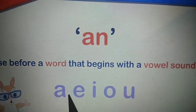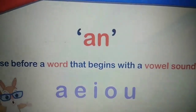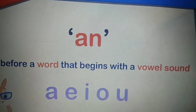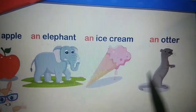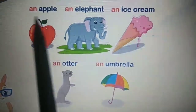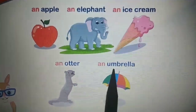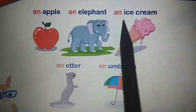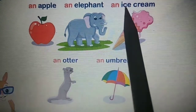Jin words ke starting mein, beginning mein, vowel letters aate hain — A, E, I, O, U — unke pehle hum AN article ka use karenge. Now let us see a few examples: an apple, an elephant, an ice cream, an utter, an umbrella. All these five words are beginning with vowel letters A, E, I, O, U. That is the reason why we use AN before these words, because they begin with a vowel sound. So now you understand that we use AN before vowel-sounding words.